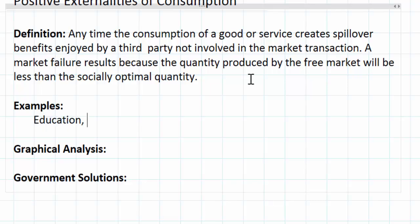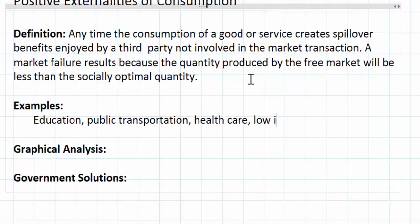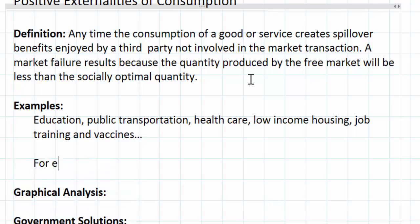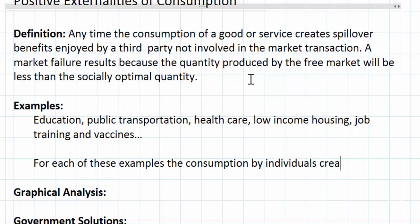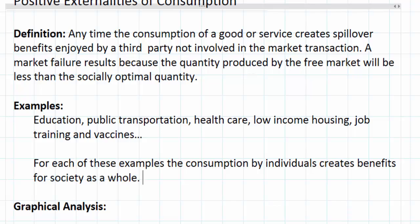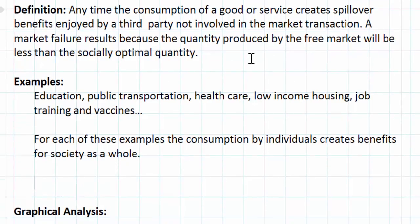Some classic examples of positive externalities of consumption include education, public transportation, healthcare, low-income housing, job training, and vaccines. There are many other examples, but these all share something in common: for each of these, the consumption by individuals creates benefits for society as a whole. Let's look at one case study as an example.